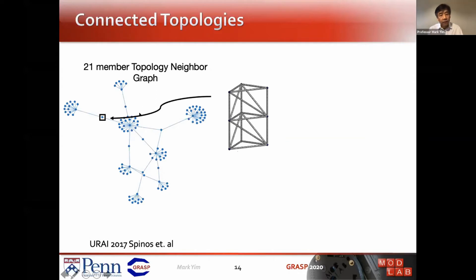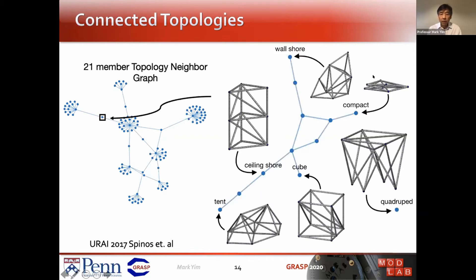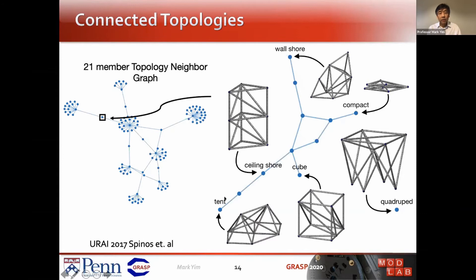When you start thinking about the theory of these things, this is where it gets interesting. One of my students came up with what we call a topology neighbor graph. This represents a particular configuration as a particular dot on the graph. If you do a merge of two nodes, you end up with another connected dot on the graph, and if it splits in a different way, each dot is a different configuration. There are seven different possibly useful configurations — something like a tent, or a cube, or one with four appendages useful for a quadruped-type configuration. You can see which configurations can be connected and what merging and splitting steps are needed. For this particular set, we realized the quadruped is not connected — you cannot get to the quadruped through merging and splitting alone.